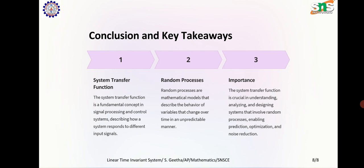In conclusion, the system transfer function is a fundamental concept in signal processing and control systems, describing how a system responds to different input signals. Random processes are mathematical models that describe the behavior of variables that change over time in an unpredictable manner. The system transfer function is crucial in understanding, analyzing, and designing systems that involve random processes, enabling prediction, optimization, and noise reduction. Thank you.